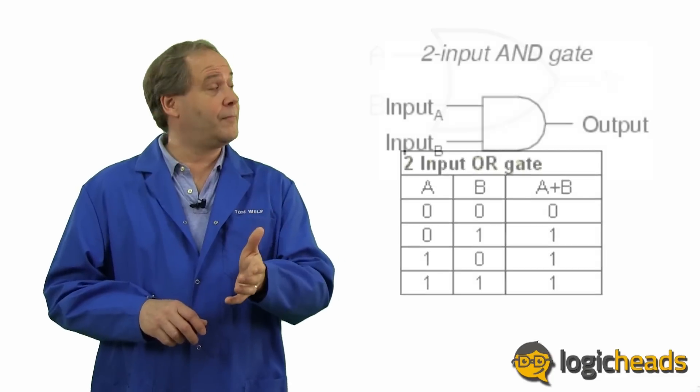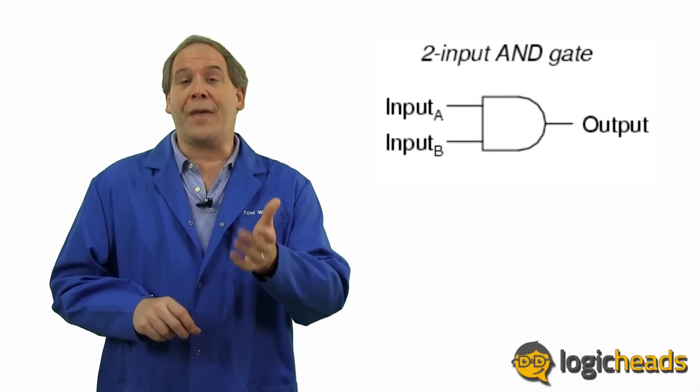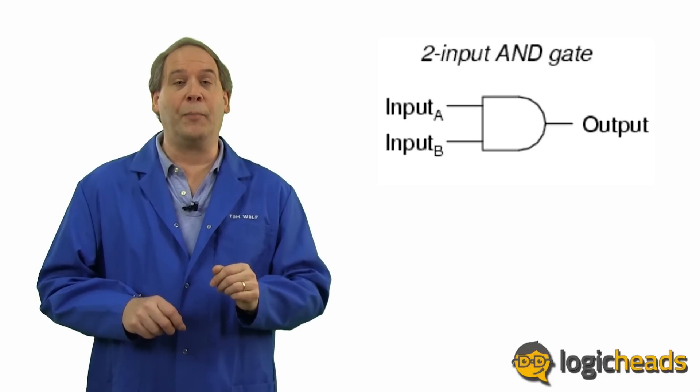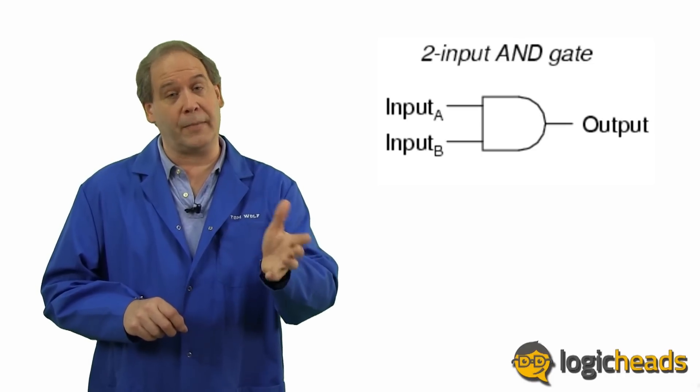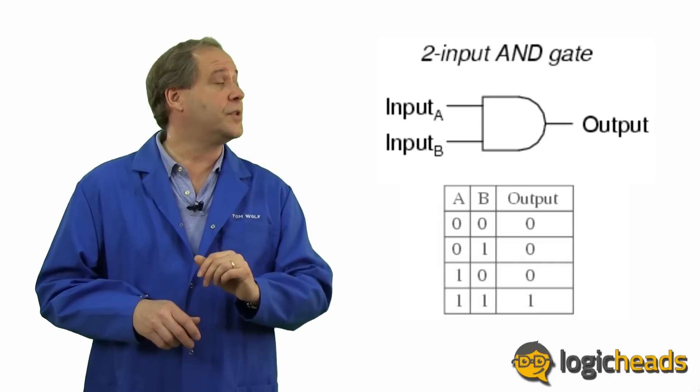And here's its friend, the AND gate. If both A and B are binary 1, then the output is a binary 1. Otherwise, the output is 0. And here's its truth table.